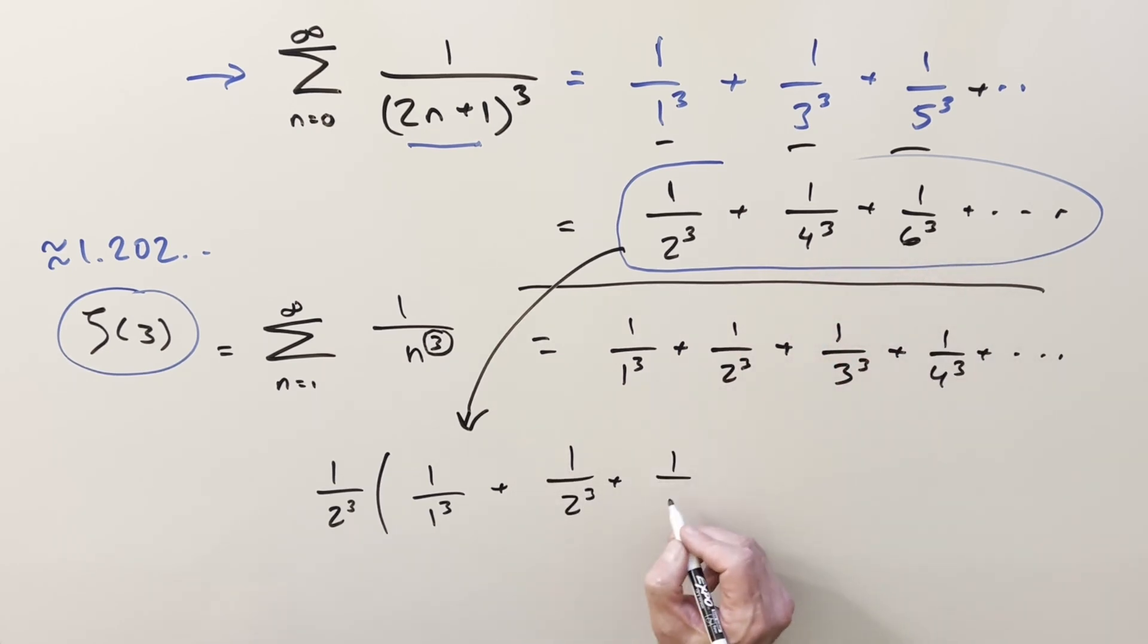The third becomes 1/3³. You can see where this is going—the stuff in parentheses is just the Riemann zeta function at 3.